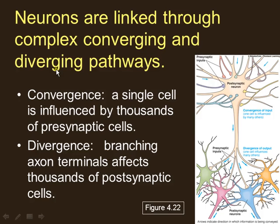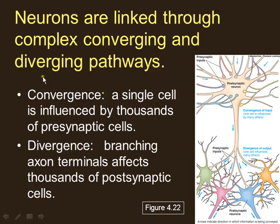All these connections are described by two terms. Convergence means connections come together — many neurons sending to one. For example, neurons from your arm, finger, and elbow all converge on one area of the brain. You can see this during a heart attack: pain signals from the heart converge on neurons near those from the arm, so the signal is so powerful it feels like pain shooting up the arm, into the chest, back, and neck.